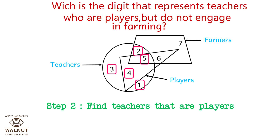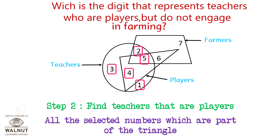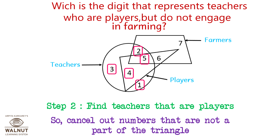Step 2: Find the teachers that are players. All the selected numbers which are part of the triangle are the players. So cancel out the numbers that are not part of the triangle — 3 cancels out, 1 cancels out, and 2 cancels out.